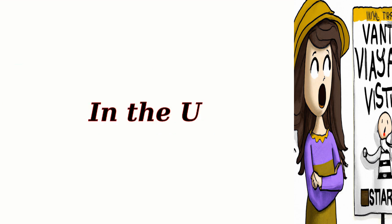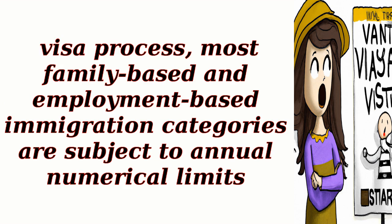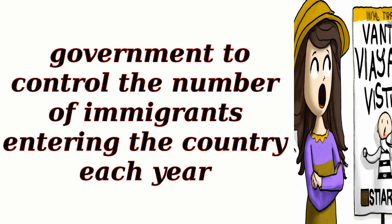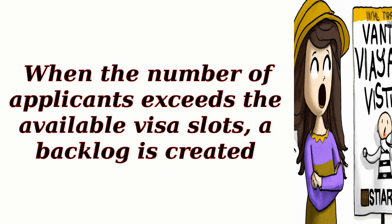In the U.S. visa process, most family-based and employment-based immigration categories are subject to annual numerical limits. These limits are set by the U.S. government to control the number of immigrants entering the country each year. When the number of applicants exceeds the available visa slots, a backlog is created.